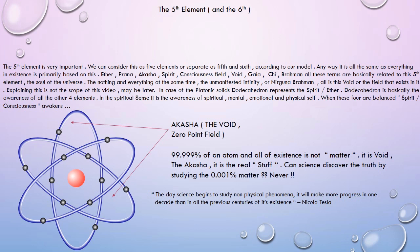It is the nothing and everything at the same time — the unmanifested infinity, or Nirguna Brahman. In the case of platonic solids, dodecahedron represents spirit or ether. Dodecahedron is the awareness of all the other four elements — awareness of the spiritual, mental, emotional, and physical self. When these four are balanced, spirit or consciousness awakens. Akasha is the void, the zero point field. It is not the sky we see when we look up. The Sanskrit term Akasha means the space between the electrons — it contains the source of everything, not vacuum, but a plenum of infinite energy, the zero point radiant field.